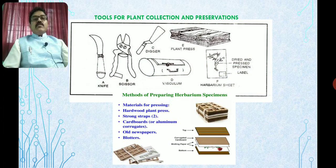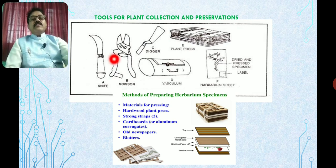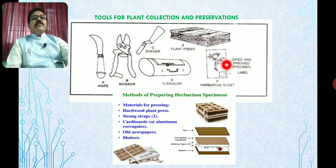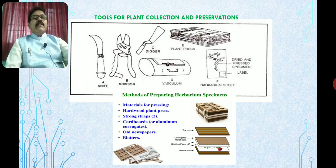These are the various tools used during field visits for collection and preservation. As shown here, this is a scissor and knife, this is the vasculum where plant material is collected, this is a digger, and this is the sheet where the collected plant species should be pressed. This is a herbarium sheet and how it is prepared. These are the materials used for pressing, and these are the different tools utilized for the collection of plants.